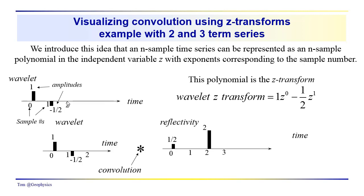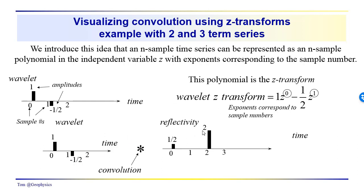There is a zero amplitude after those samples, so there is nothing to represent beyond that on the time axis. If we take a look at the Z-transform, the Z-transform of this simple wavelet is one times Z to the zero power minus one-half Z to the one power. The powers of Z correspond to the sample numbers: Z to the zero and Z to the one correspond to the first and second samples, with coefficient minus one-half. So that's our Z-transform for the wavelet. Now for the reflectivity sequence, what would the Z-transform be?